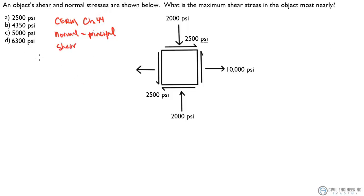Okay, so the equation that we want to use, I'm going to pull from equation 44.20 and that equation basically states that our shear, the max or the min, is equal to plus minus. So plus for max, minus for min.